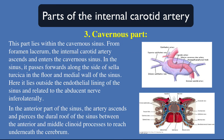The third part of the internal carotid artery: the cavernous part. This part lies within the cavernous sinus. From the foramen lacerum, the internal carotid artery ascends and enters the cavernous sinus. In the sinus, it passes forward along the side of the sella turcica in the floor and medial wall of the sinus. Here it lies outside the endothelial lining of the sinus and is related to the abducent nerve inferolaterally. In the anterior part of the sinus, the artery ascends and pierces the dural roof of the sinus between the anterior and the middle clinoid processes to reach underneath the cerebrum.